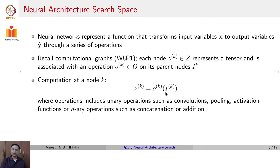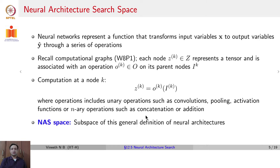What are the operations? The operations could be convolutions, pooling, activation functions, or even N-ary operations like concatenation, elementwise addition, or simple addition, and so on. The NAS search space is generally a subspace of this general definition of neural architectures.